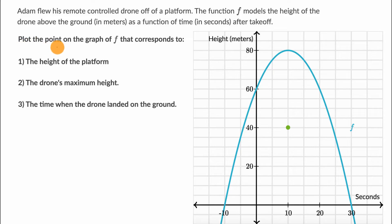What they want us to do is plot the point on the graph of f that corresponds to each of the following things. Pause the video and see if you can do that. Obviously you can't draw on your screen—this is from an exercise on Khan Academy—but you can visually look at it and even with your finger point to the part of the graph that represents each of these things.